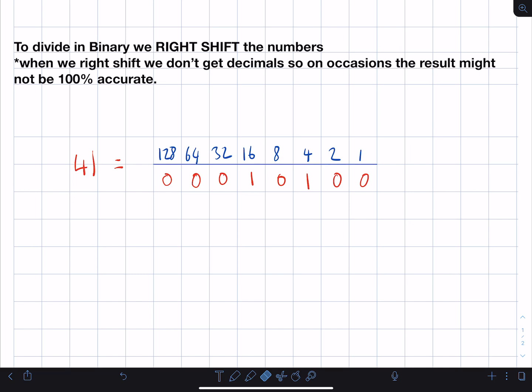Now normally, if we were to divide 41 by 2, we'd get 20.5, but on this occasion we've got 16 plus 4, which gives us 20. So this isn't entirely 100% accurate, you can see here, but we've got a result that's quite close. So this will enable us to divide by 2.